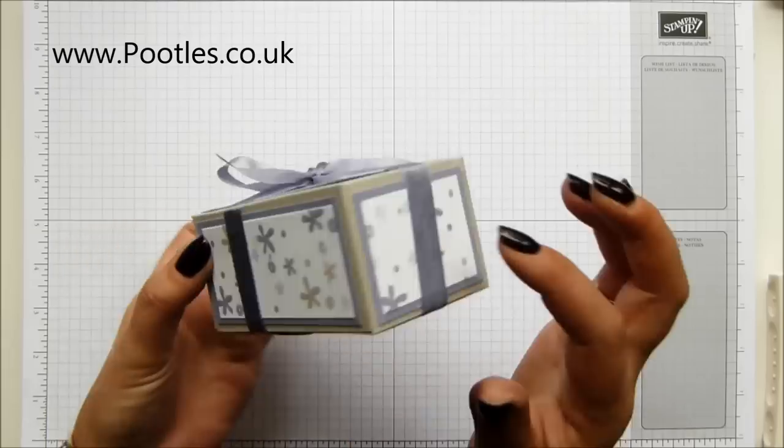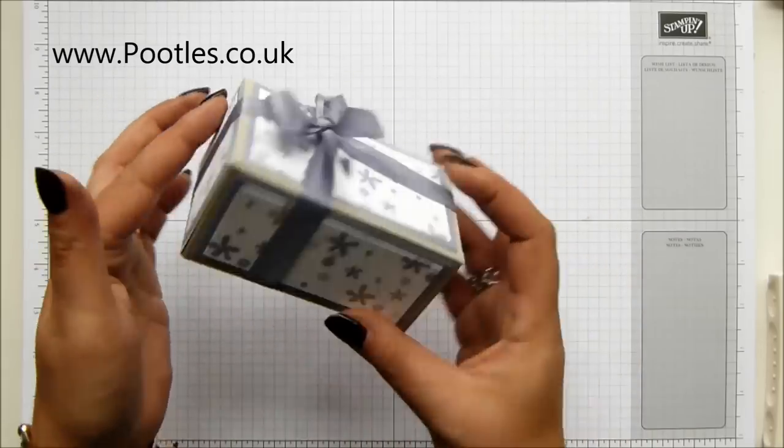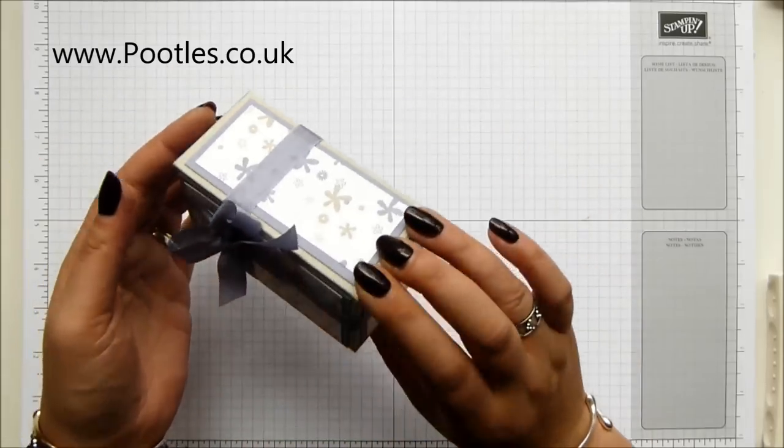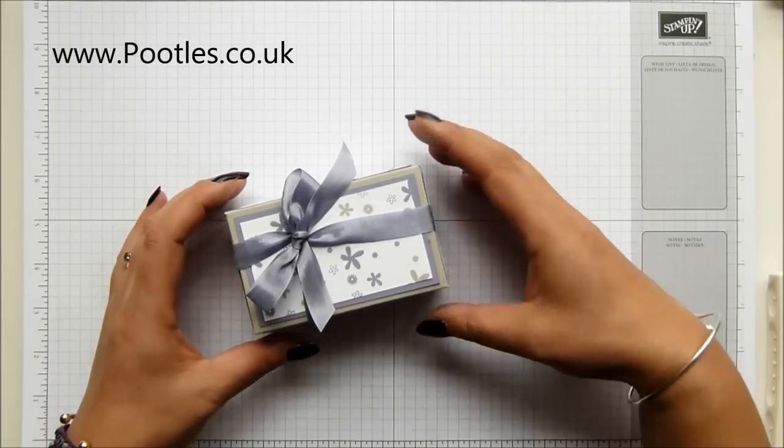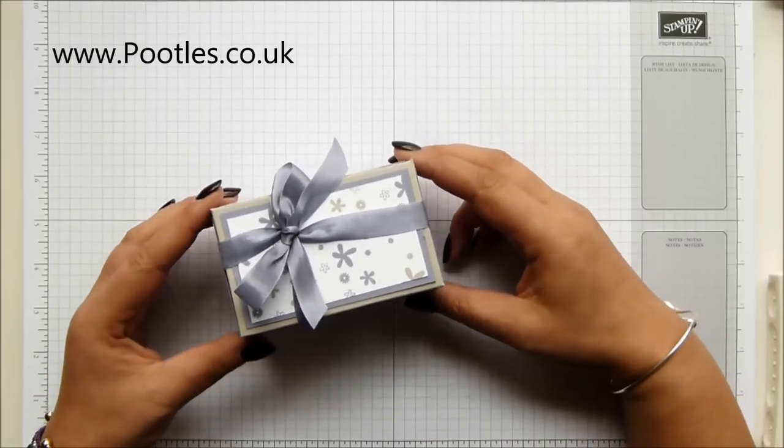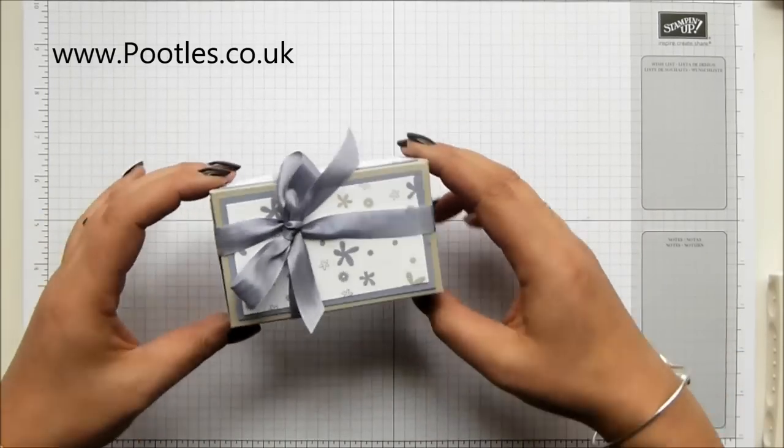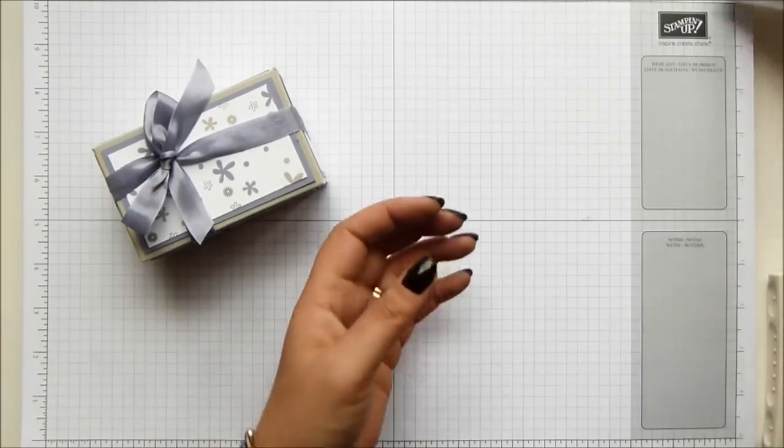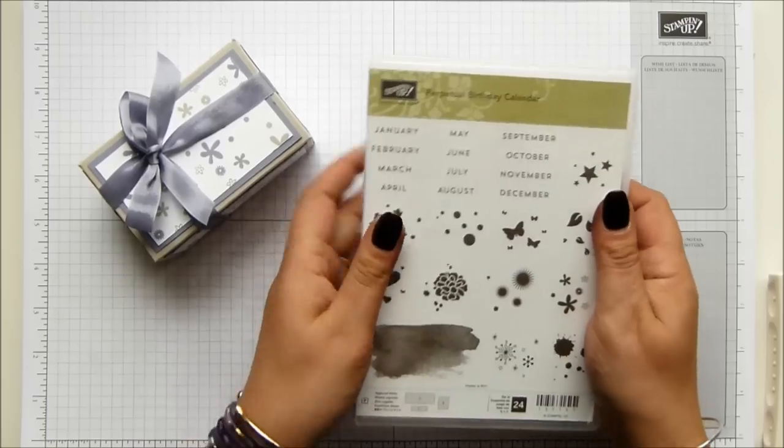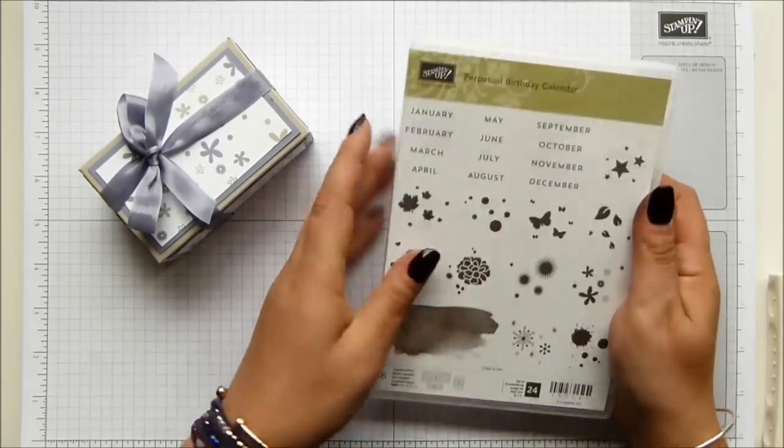I've hand-stamped everything on it. And that's what happens when the Designer Series paper goes on the retiring list - it sells out, you've got nothing left and you can't show the new stuff yet. So this has all been hand-stamped by using my beautiful perpetual birthday calendar stamp set. Have you got it yet? You should do.